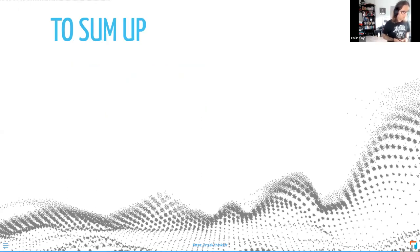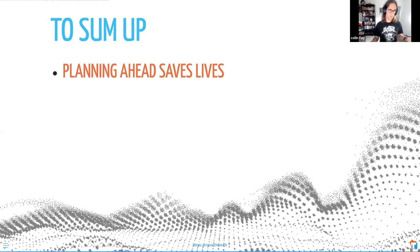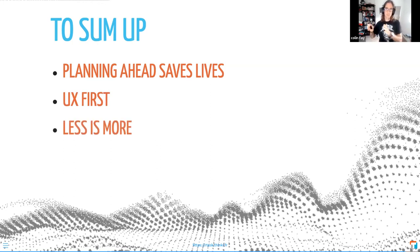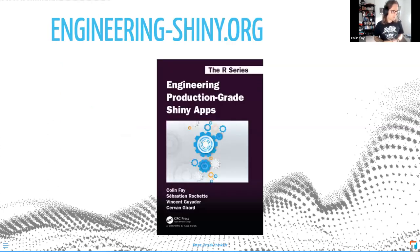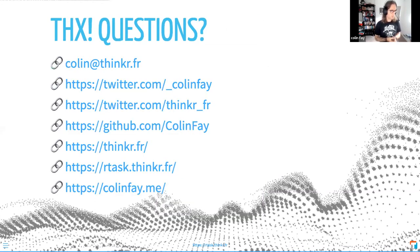To sum up all the things I wish I had known before, and the errors I've made building Shiny apps: planning ahead will save lives. Always think about your users — they are the reason you're writing your application. Less is more — please don't add a widget just for the sake of adding a widget. Elegant is not necessarily efficient. And of course, test all the things, always. If you want to learn more, check out the 'Engineering Shiny' book in paperback or online at engineeringshiny.org.